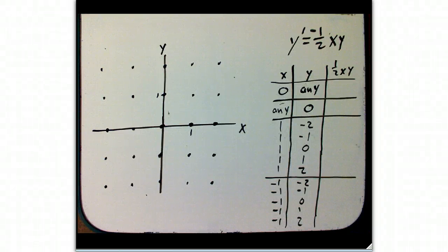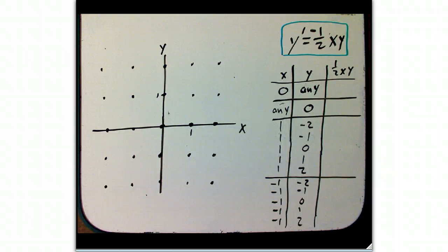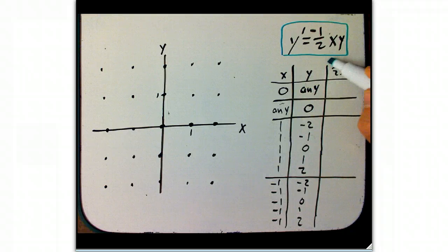Here's an example of plotting a slope field by hand. Here's the differential equation we've got. X is the independent variable, y is the dependent variable, and y prime, or dy/dx, is equal to minus one-half xy. Oops, I forgot to put the minus in here.